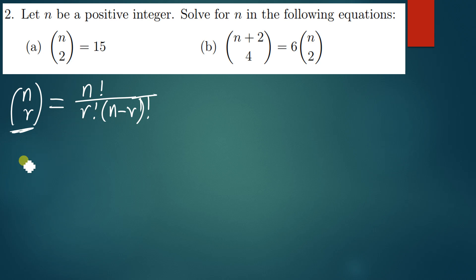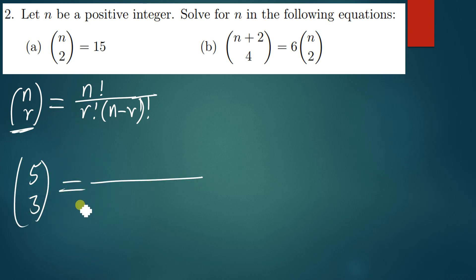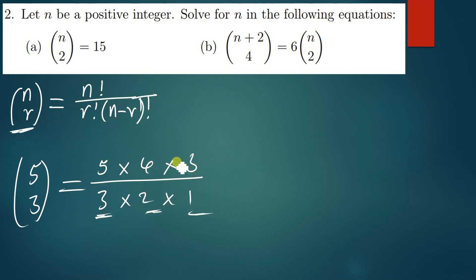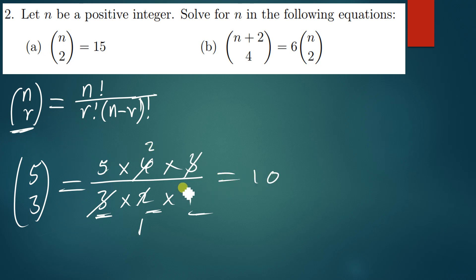Let me give you another example: 5 choose 3. I'll start by writing the denominator, which is 3 factorial: 3 times 2 times 1. Since there are 3 numbers there, on the numerator I also write 3 numbers starting from n: 5 times 4 times 3. The number of numbers down should equal the number of numbers on the numerator. I cancel 3 and 3, then 2 goes into 4 twice, giving 5 times 2 equals 10 as the solution. This is how you use the second method.